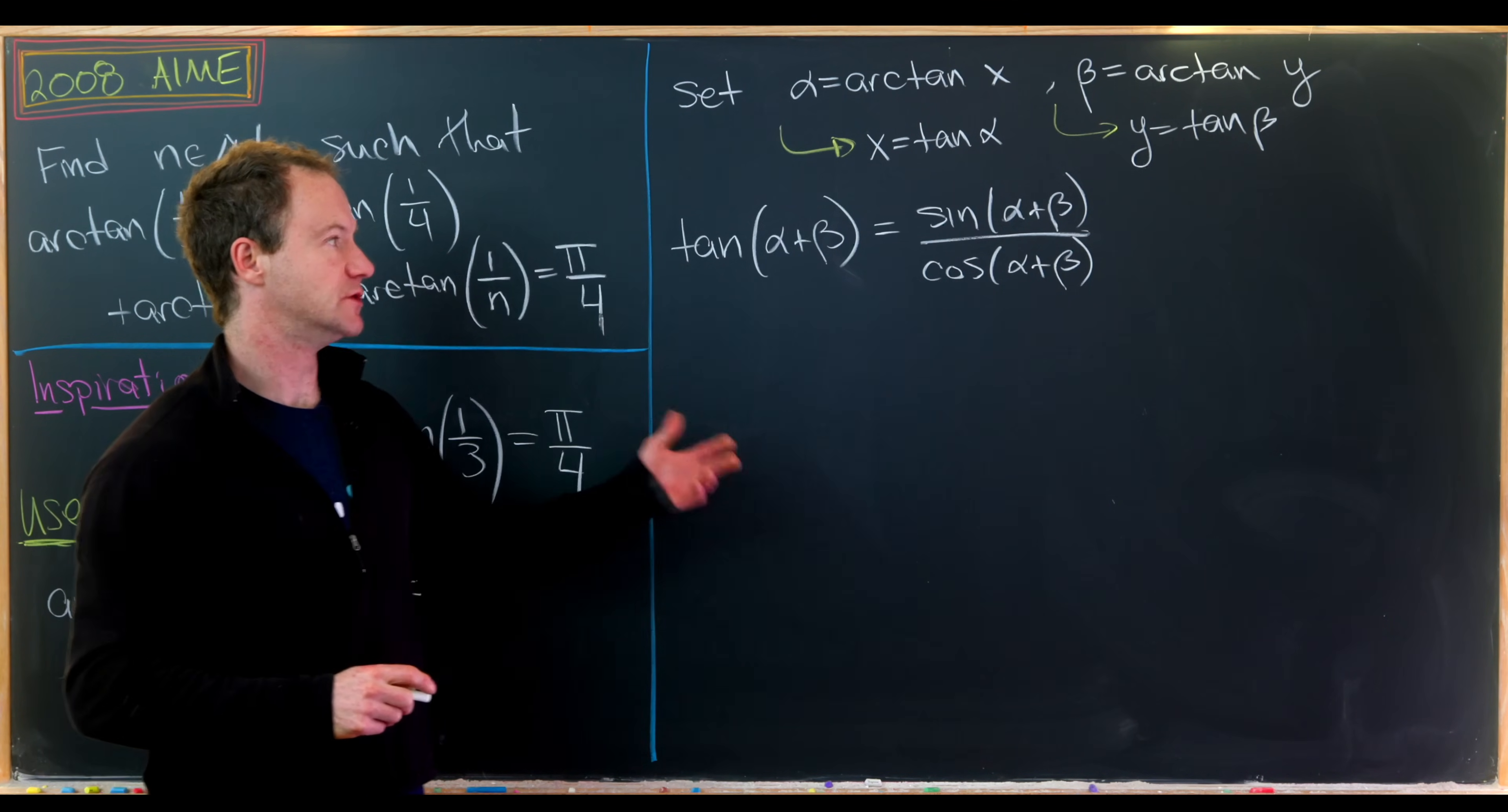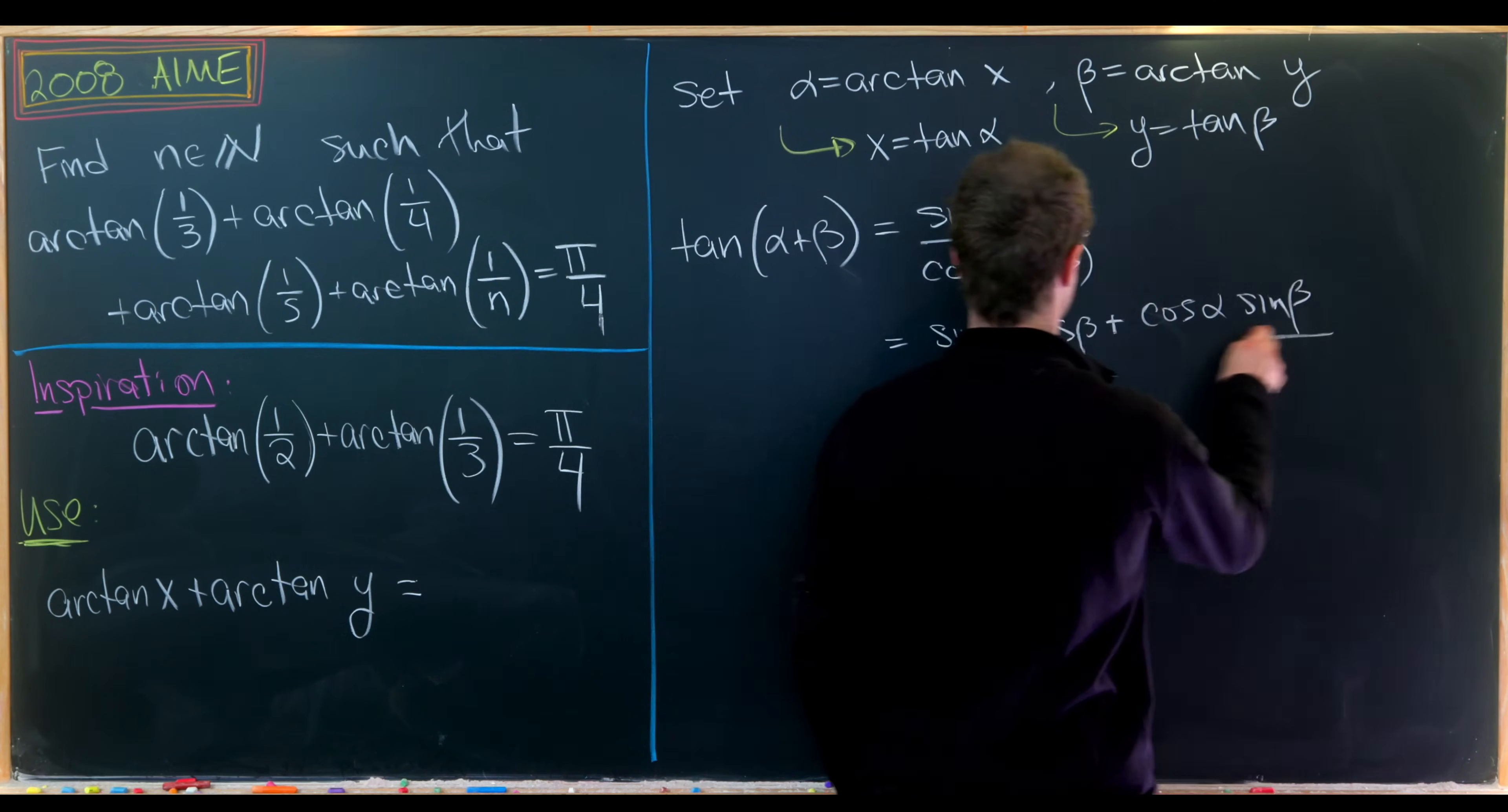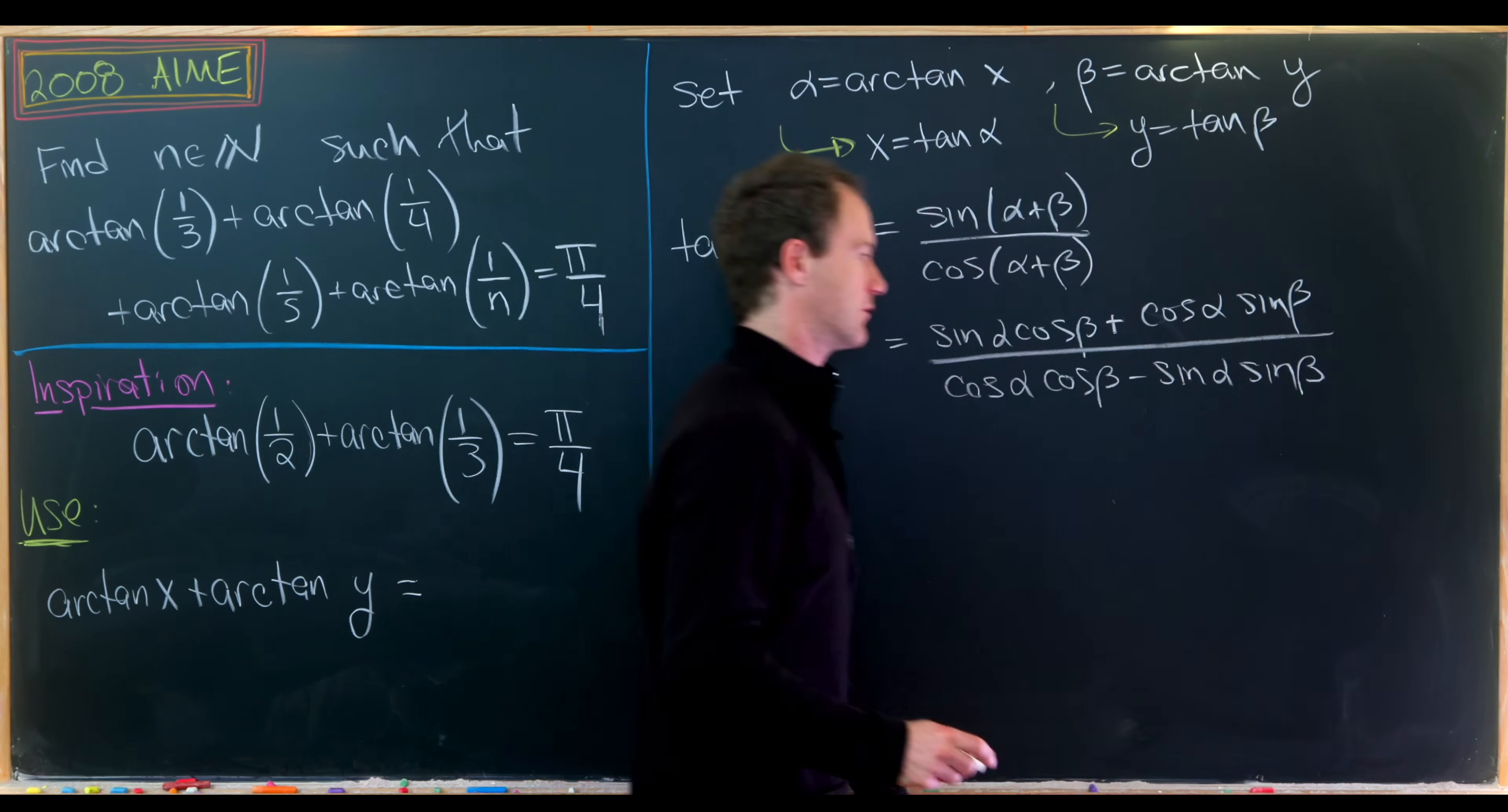Now I'll use the sum angle formula for sine and cosine. The one for sine is sin(α)cos(β) + cos(α)sin(β), so that's our numerator. In the denominator we have cos(α)cos(β) - sin(α)sin(β).